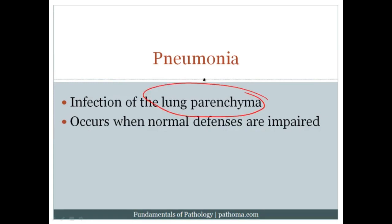Pneumonia occurs when the normal defenses are impaired. Normal defenses include our cough reflex — if that's impaired, we're not able to remove organisms and particles we would normally cough up. Damage to the mucociliary escalator can also increase the risk. The lung conducting system is lined by ciliated respiratory epithelium. Those cilia beat upward, pushing mucus up the airway and back down the throat so we swallow the mucus normally produced, clearing anything trapped within it.